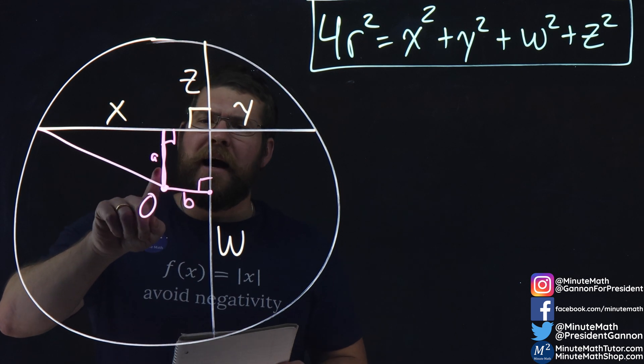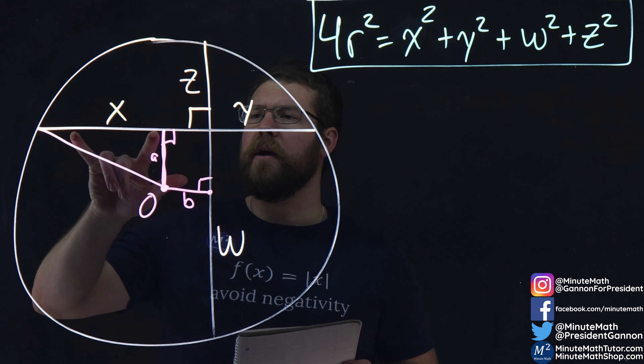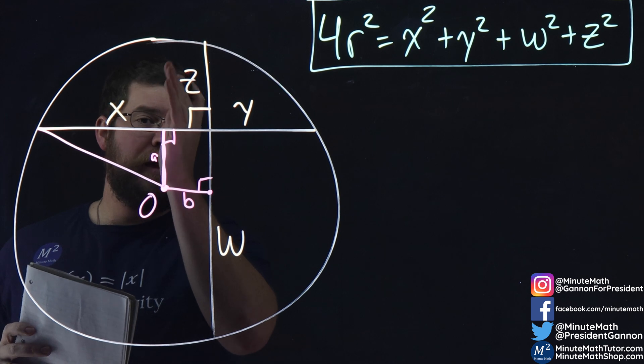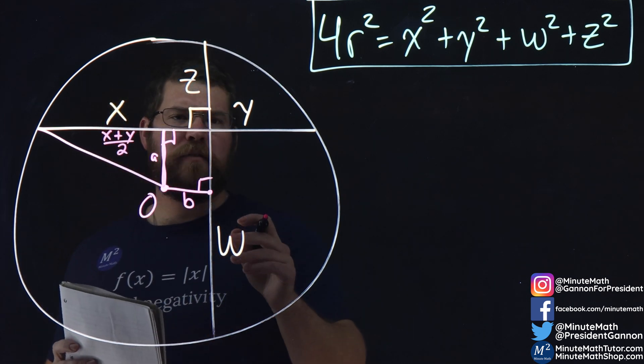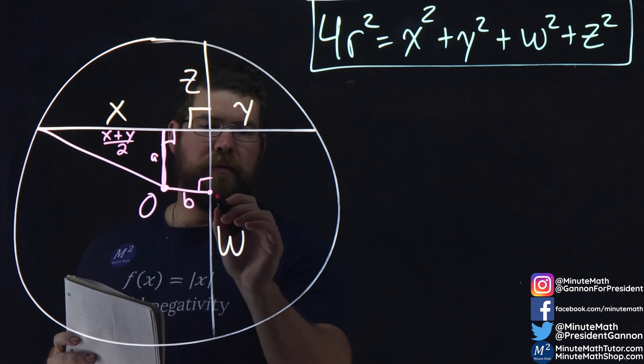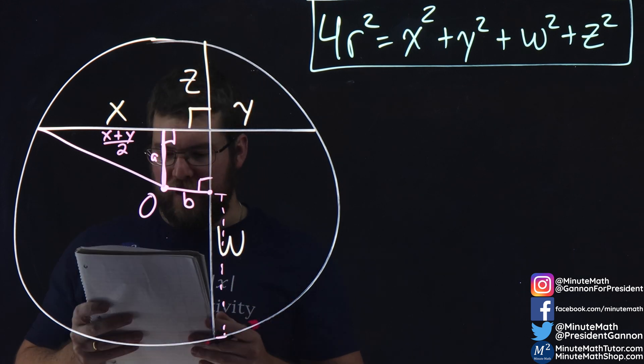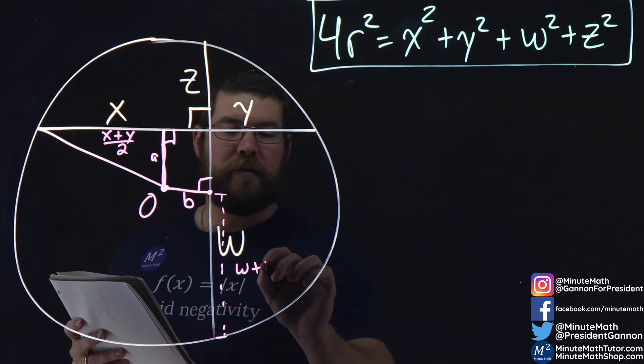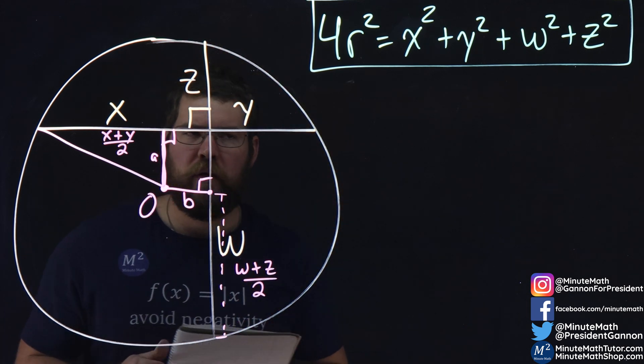Now, if it bisects chord xy, what's the length on that triangle? Well, that length is just going to be (x + y)/2, because it's halfway. And this overall length here, that w, is going to be (w + z)/2. And the second half up there is the same thing.